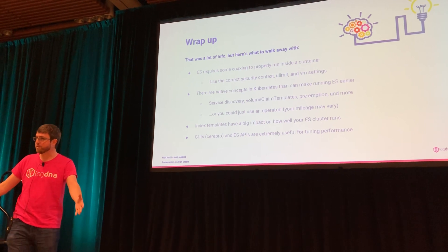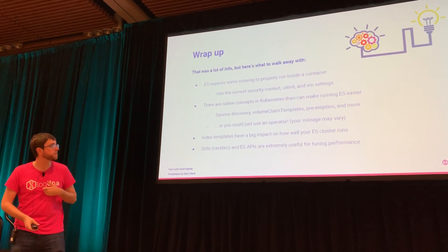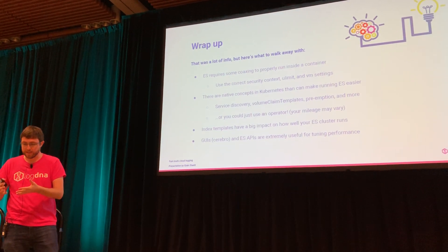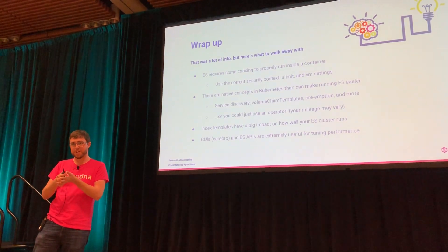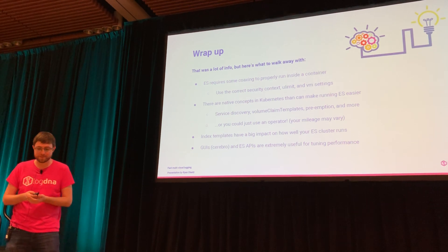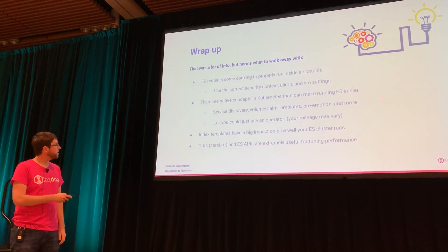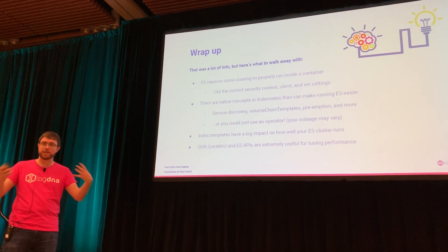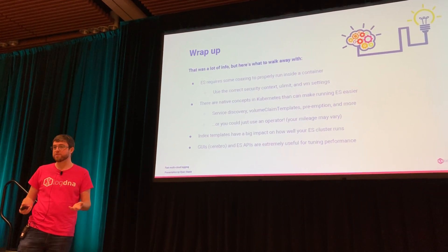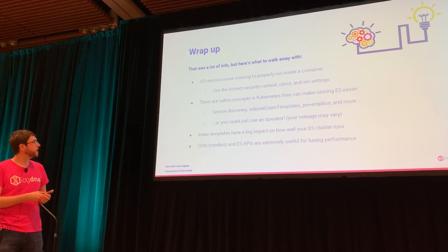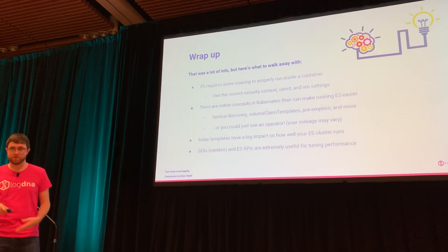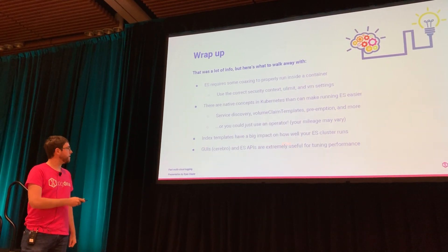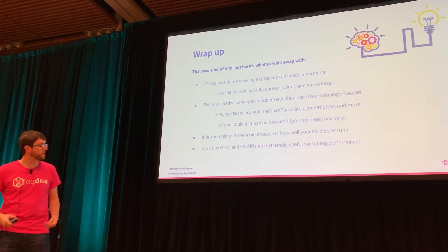There's a lot of stuff we covered, and a lot of these sound like obscure settings, but here are some important tidbits. Use the correct security context, ulimit, and VM settings — when you're running Elasticsearch in a Docker container, you have to realize it was not designed for a Docker container, and these are some things you've got to do to work around that. There are native Kubernetes concepts — service discovery, volume claim templates for disk, preemption — that make running ES easier without you having to do much manually. Index templates have a huge impact on how well your ES cluster runs. Manage your cluster using a combination of GUIs and APIs.